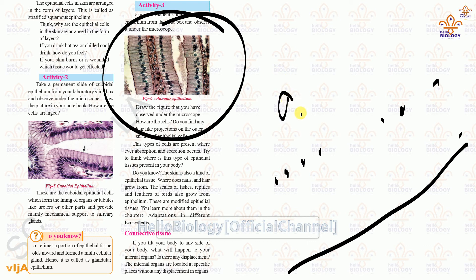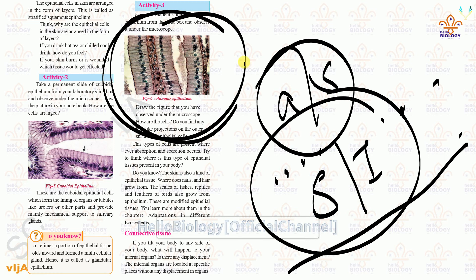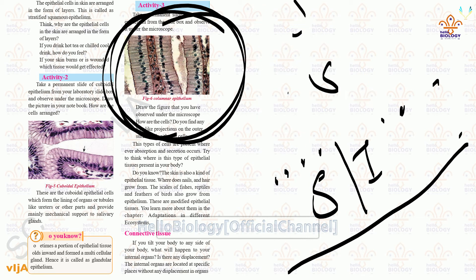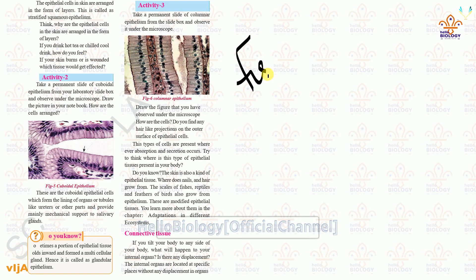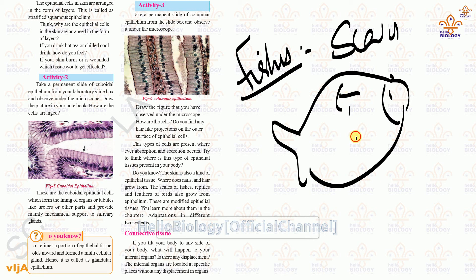Columnar epithelial tissues are present in case of absorption and secretion — for example in the stomach and intestine. In other organisms, such as fishes, this epithelial tissue forms scales. The scales on a fish's body are made up of epithelial tissue.